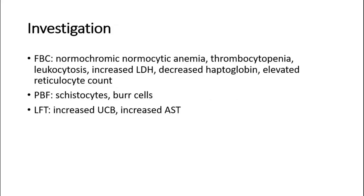For investigations, a full blood count is expected to show normochromic normocytic anemia as a sign of hemolytic anemia, along with thrombocytopenia. There will also be an increased reticulocyte count. Other findings include leukocytosis, increased LDH, and decreased haptoglobin. On peripheral blood film, schistocytes or burr cells may be seen. Liver function tests will show increased unconjugated bilirubin and increased AST.